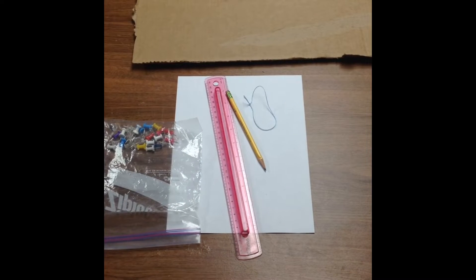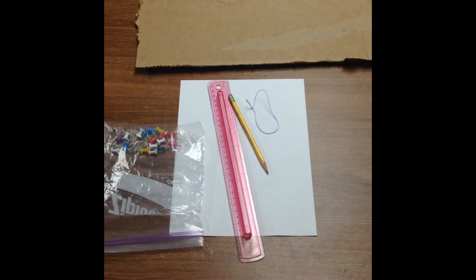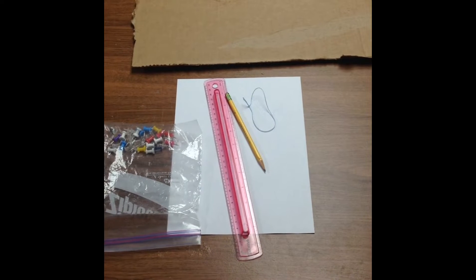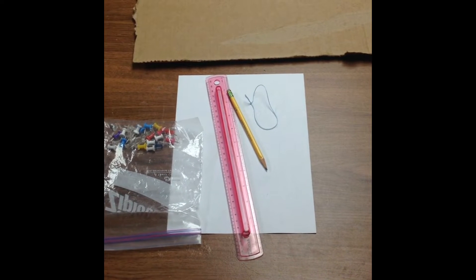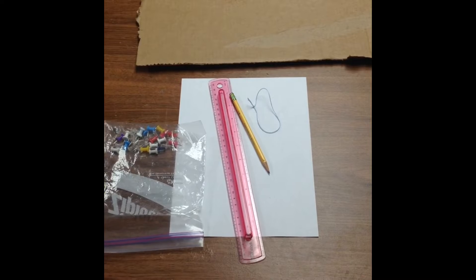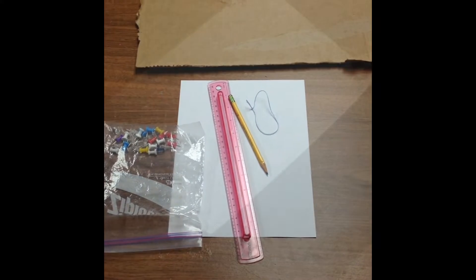So in order to create an ellipse there are several things you'll need. We will need cardboard, a white sheet of paper, a ruler, a pencil, 20 centimeters of string, and two pushpins.